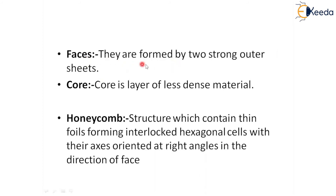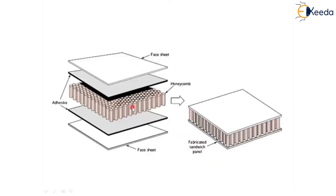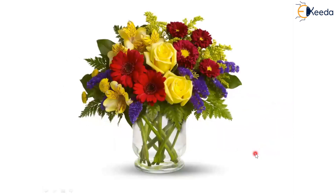The faces are formed with two strong outer sheets and the core is always a less dense material. The honeycomb structure between two layers gives the maximum advantage compared to other materials. The top and bottom layers are of the same material, but the middle one is a different material — this is a sandwich type of composite material. This is all about the various types of composites in material technology; in the next sessions we will discuss some technological points. Thank you all.